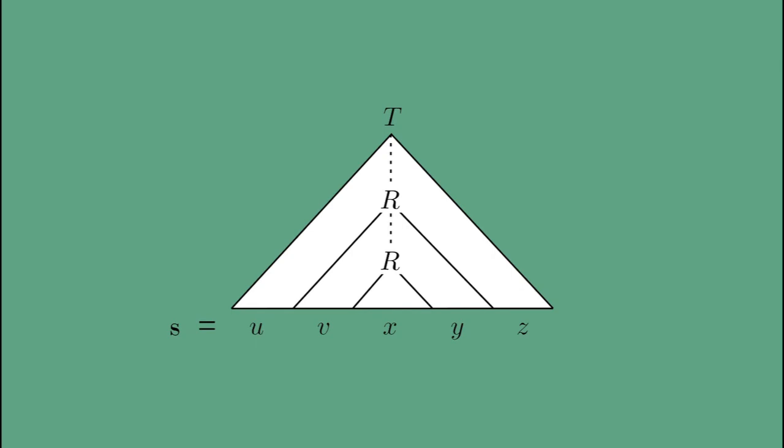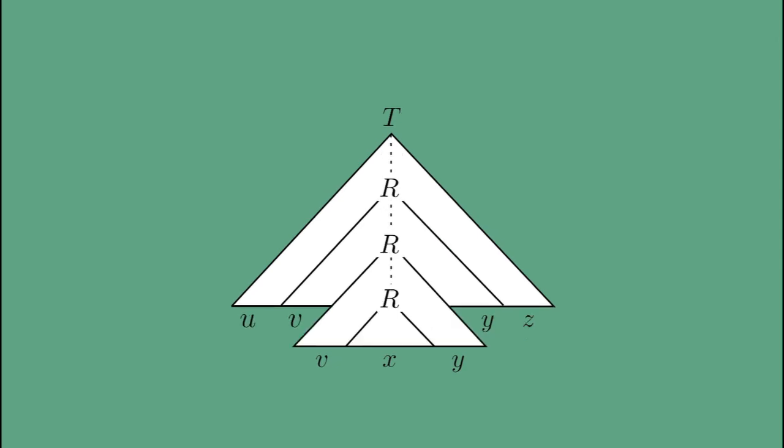Both of these subtrees are generated by the same variable, so we may substitute one for the other and still obtain a valid parse tree. Replacing the smaller with the larger repeatedly gives parse trees for the pumped strings where i is greater than 1.